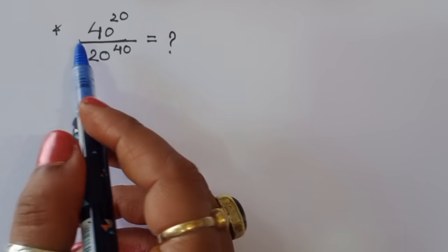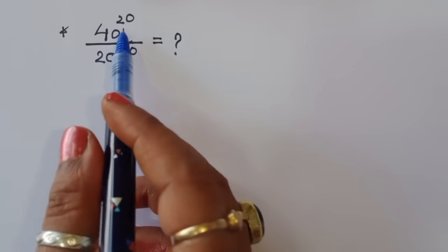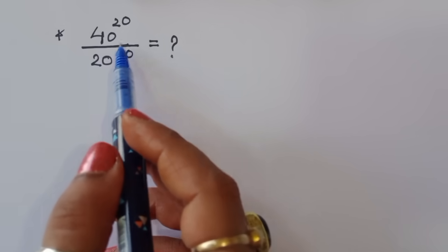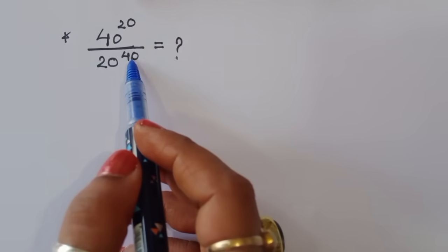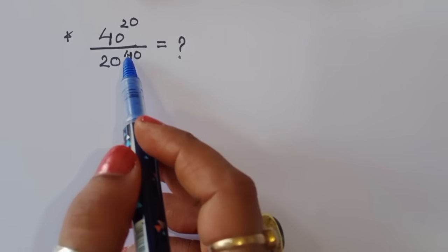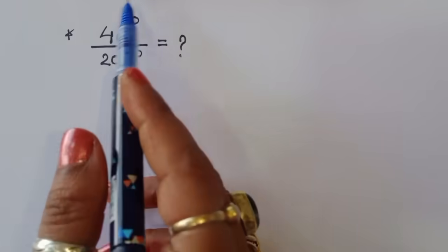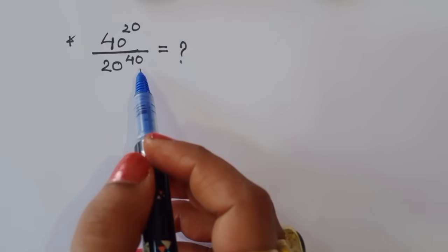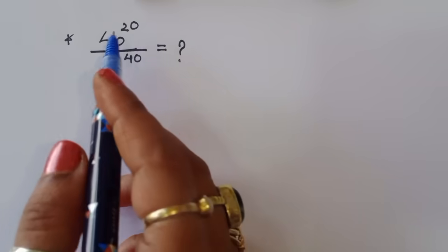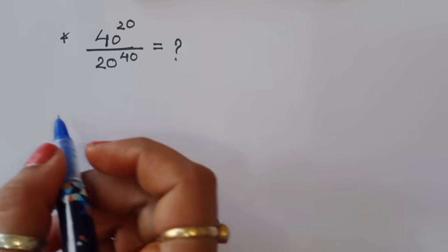The question is: given 40 to the power 20 divided by 20 to the power 40, we have to find out the value of this term. Let's see the solution.